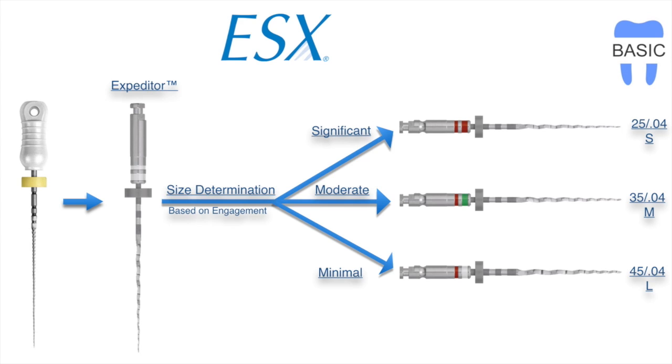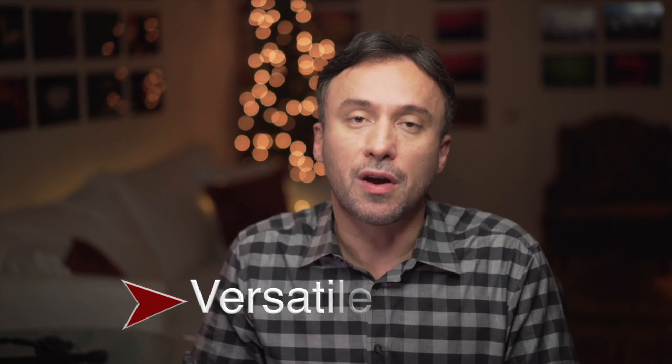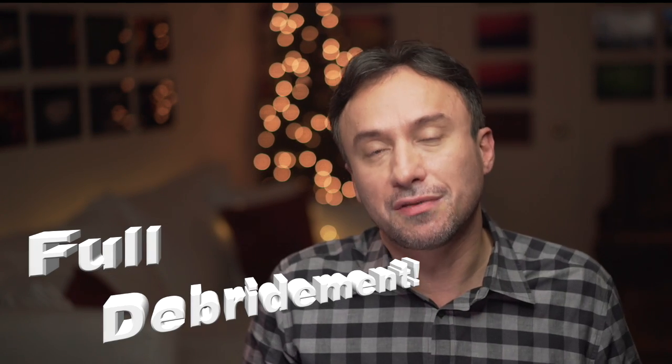You now have all the in-between ESX file sizes as well, and you can choose either size 30 or 40 as a master file if that's what you prefer. You also have the end-of-sequence files that go all the way to size 80. The protocol is merely a guideline — the expediter-to-master-file relationship is not written in stone. Your goal is full debridement of the canal, and if there's leftover tissue on the walls, move up to a larger master file if needed.